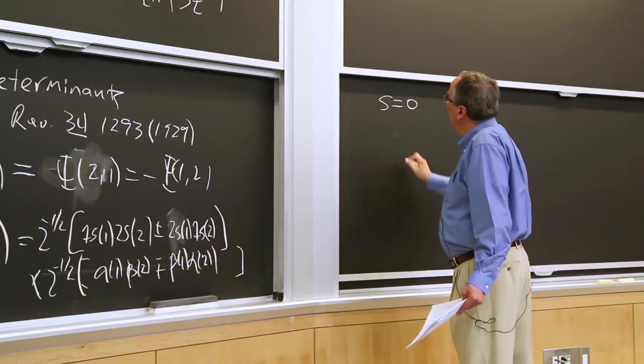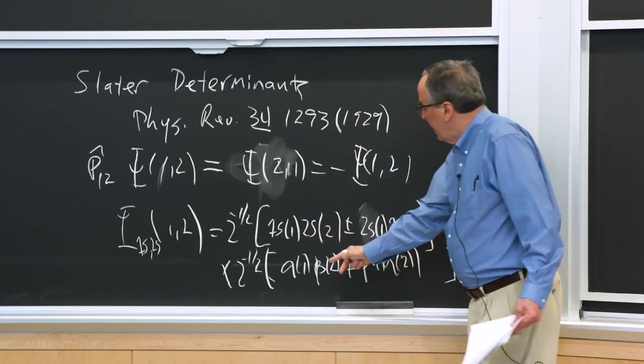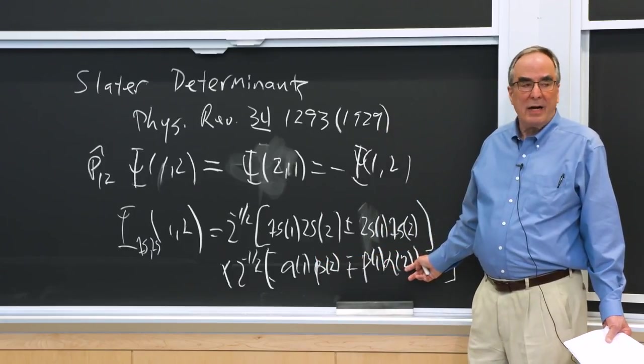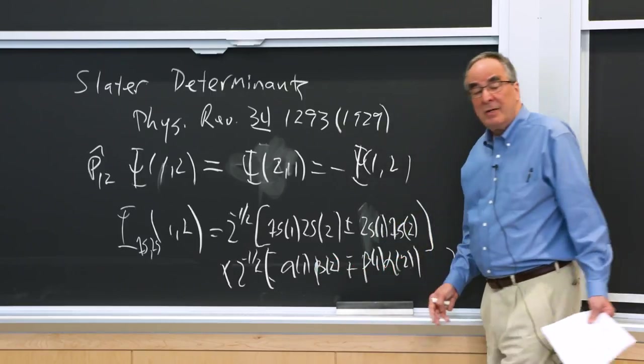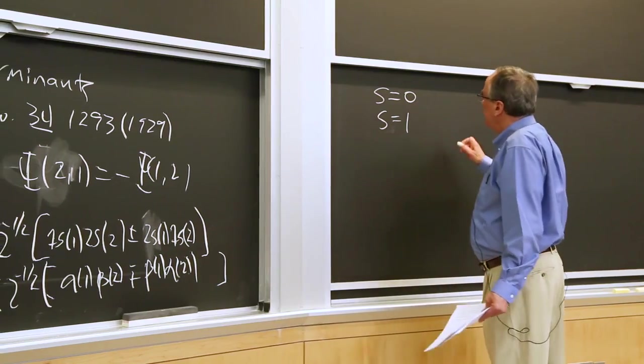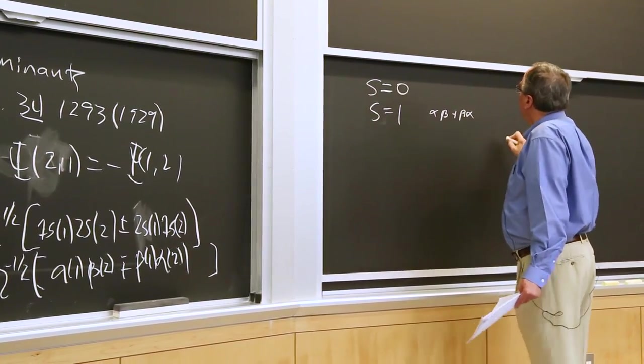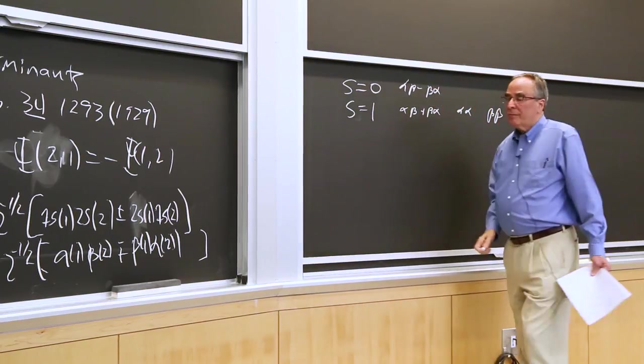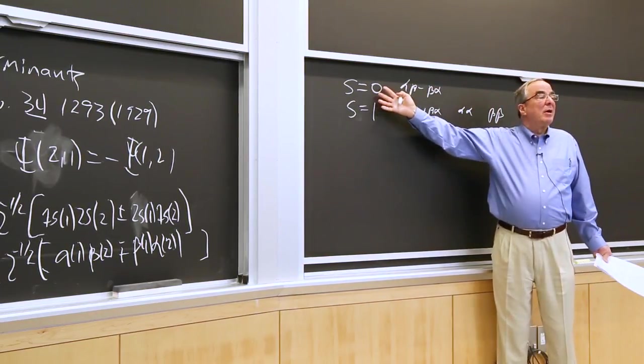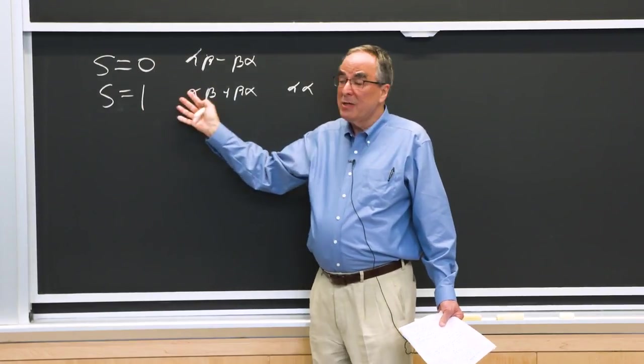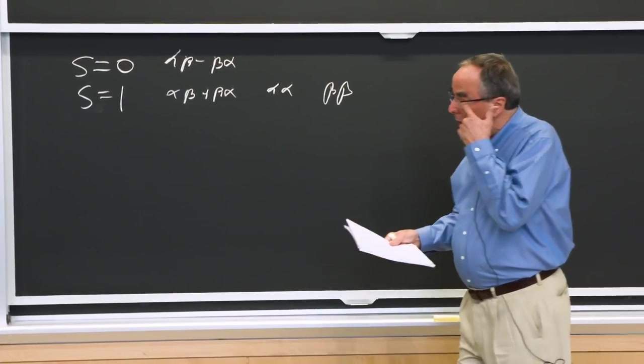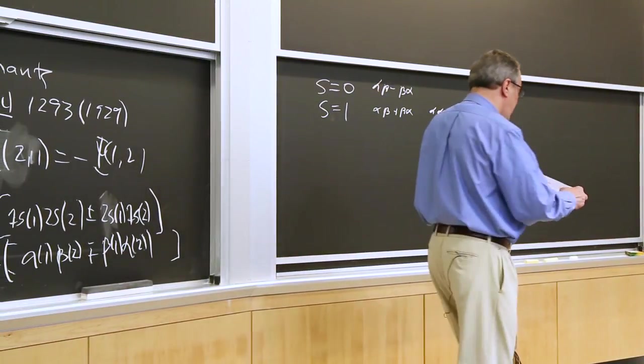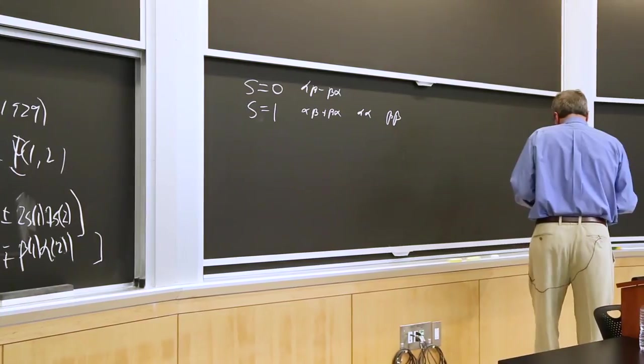So s equals 0, s equals 1. We recognize this alpha beta minus beta alpha as the singlet spin state. And alpha beta plus beta alpha as the triplet spin state. So we have alpha beta plus beta alpha and alpha alpha and beta beta, and we have alpha beta minus beta alpha. So we call s equals 0 a singlet and this a triplet because of the number of states. And this wave function has the necessary spin symmetry and the necessary permutation symmetry.